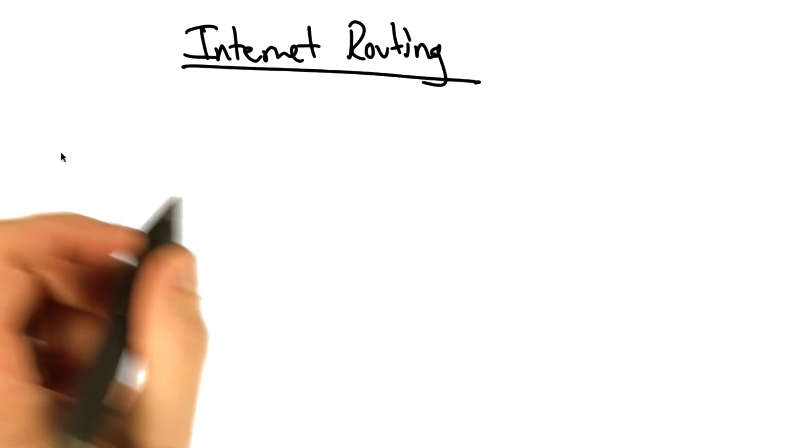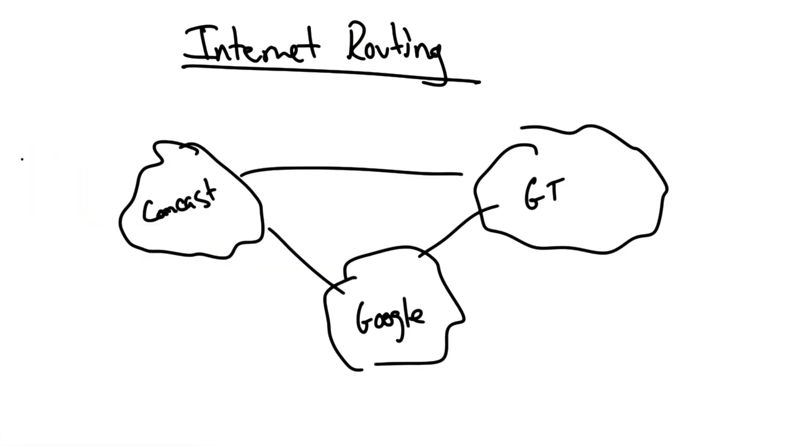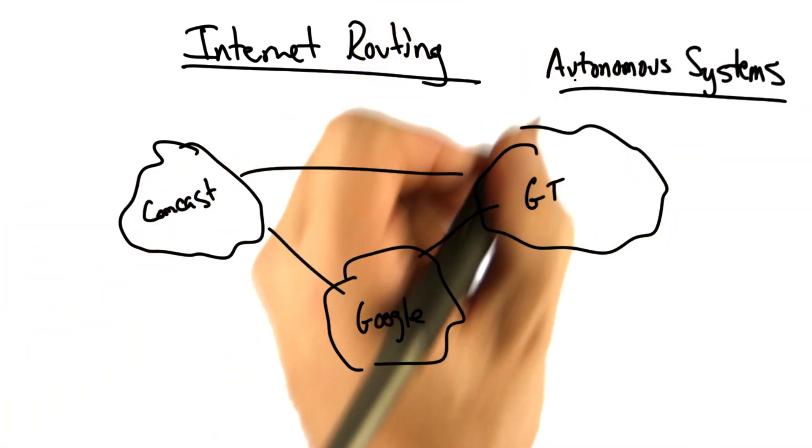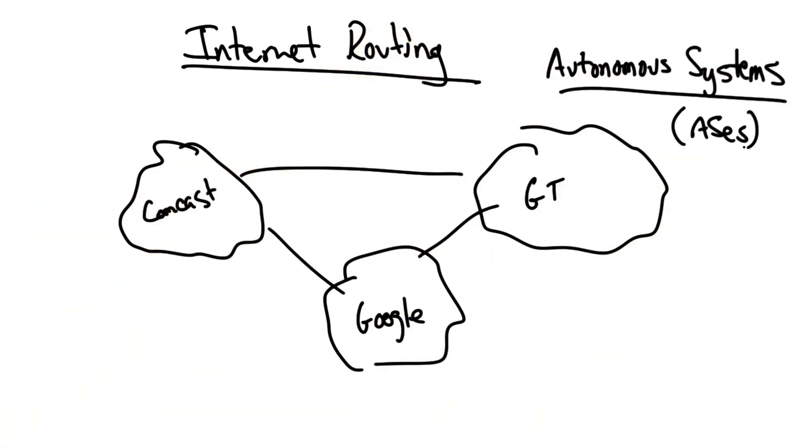The next few lessons will cover internet routing. Contrary to what you might think, the internet is not a single network, but rather a collection of tens of thousands of independently operated networks, or autonomous systems, sometimes simply called ASs.